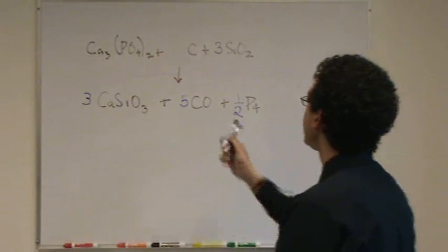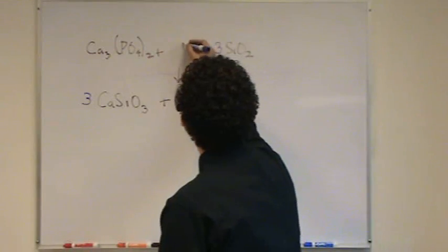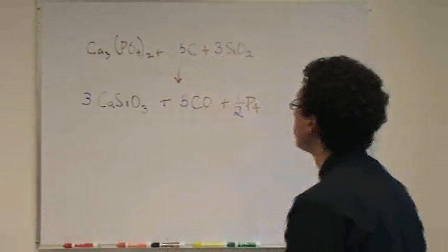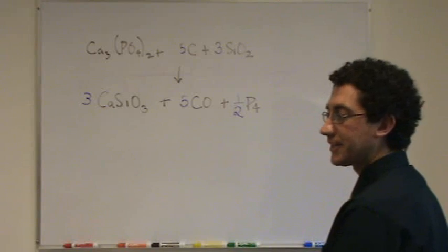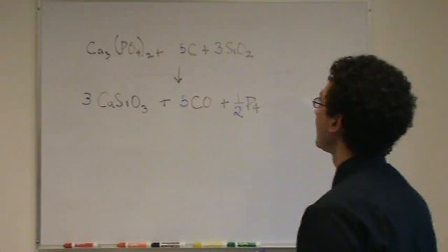OK. Now carbons. There's 5 so I've got to have 5 here. OK. Let's just double check to make sure everything's OK. If it's not I've got to get my eraser out and fix everything. OK.